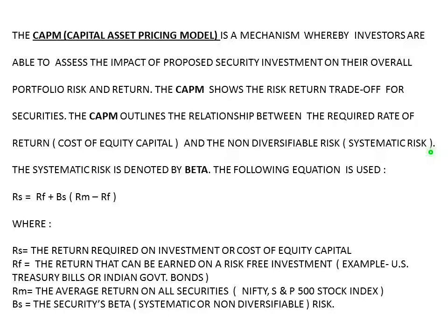The risk arising out of inflation, the risk arising out of a war, and the risk arising out of political instability are examples of non-diversifiable risk or systematic risk. The systematic risk is denoted by the term beta.